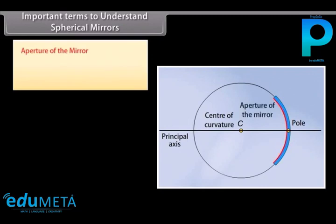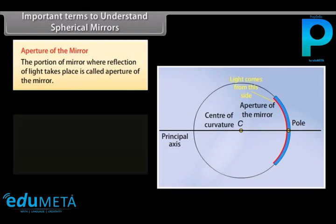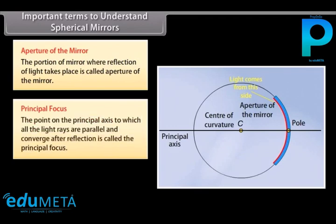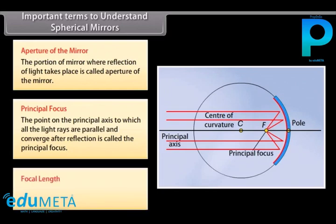Aperture of the mirror: the portion of the mirror where reflection of light takes place is called the aperture of the mirror. Principal focus: the point on the principal axis to which all the light rays parallel to the axis converge after reflection is called the principal focus. Focal length: it is the distance between the pole and the principal focus.